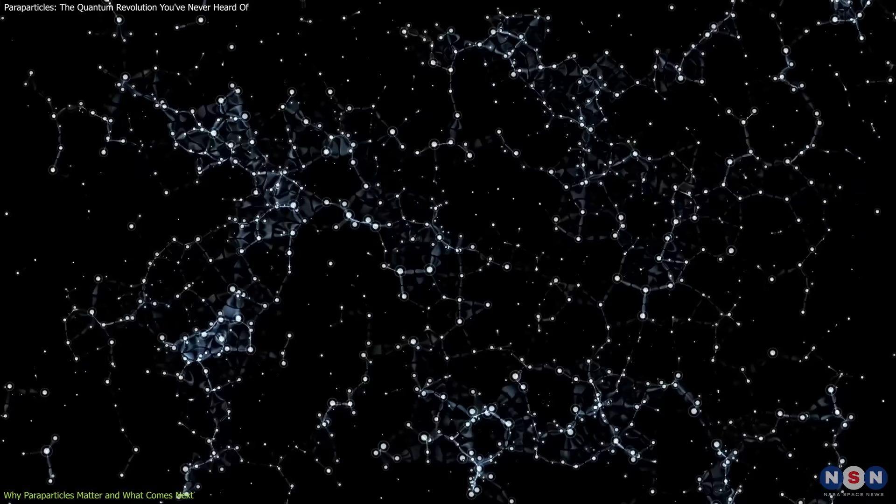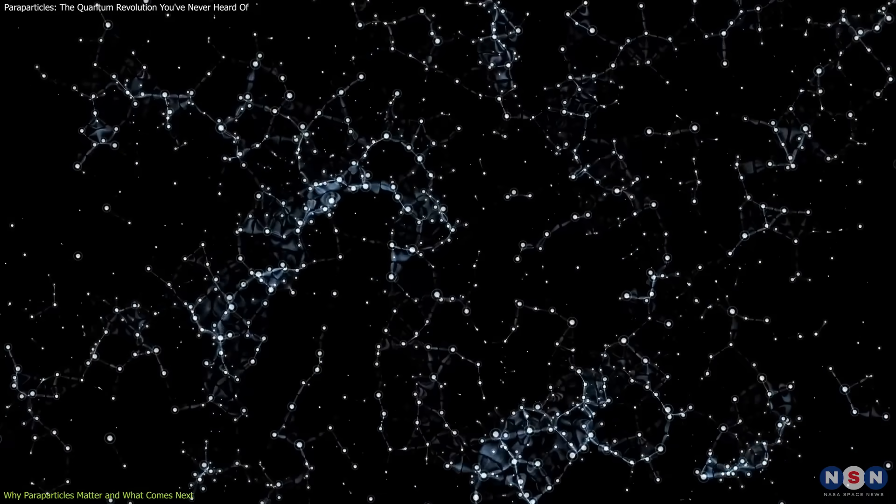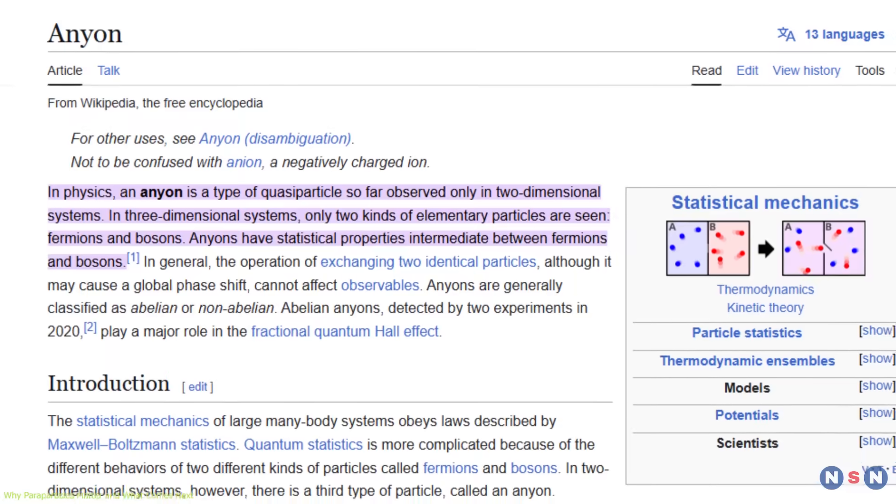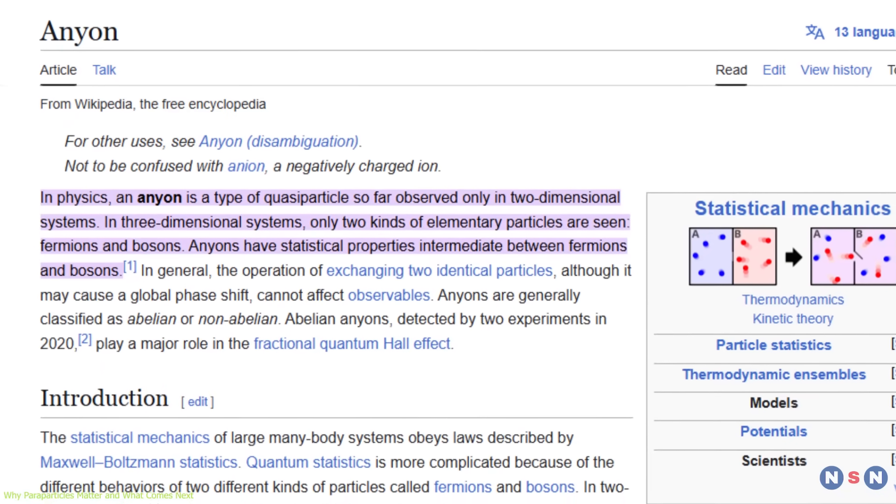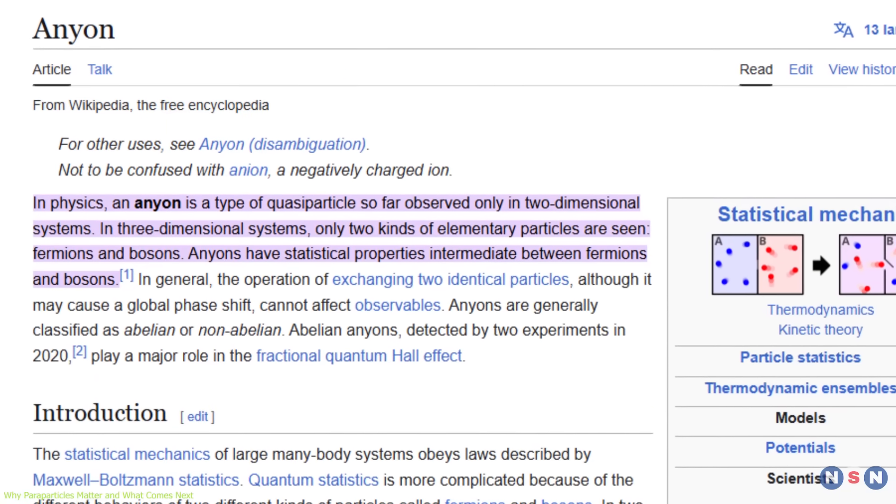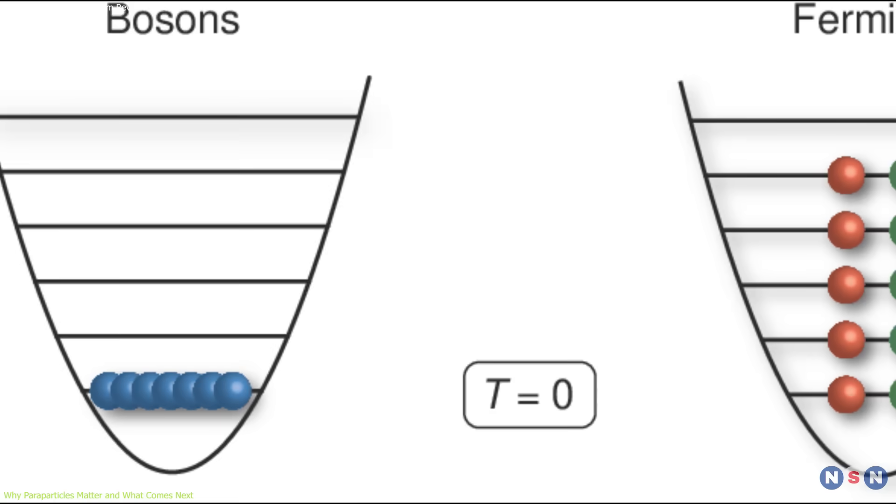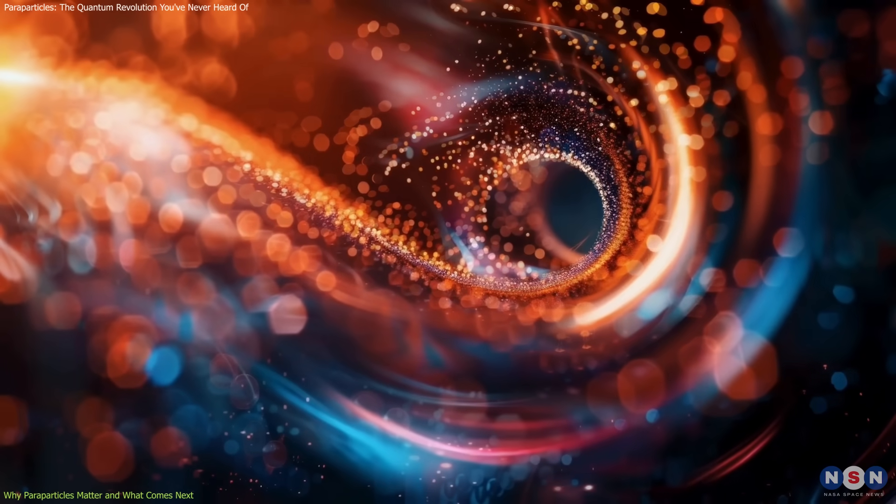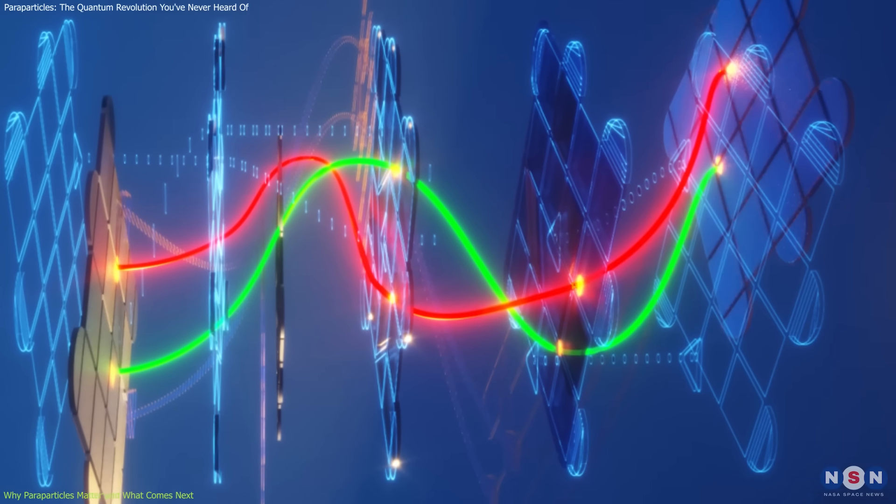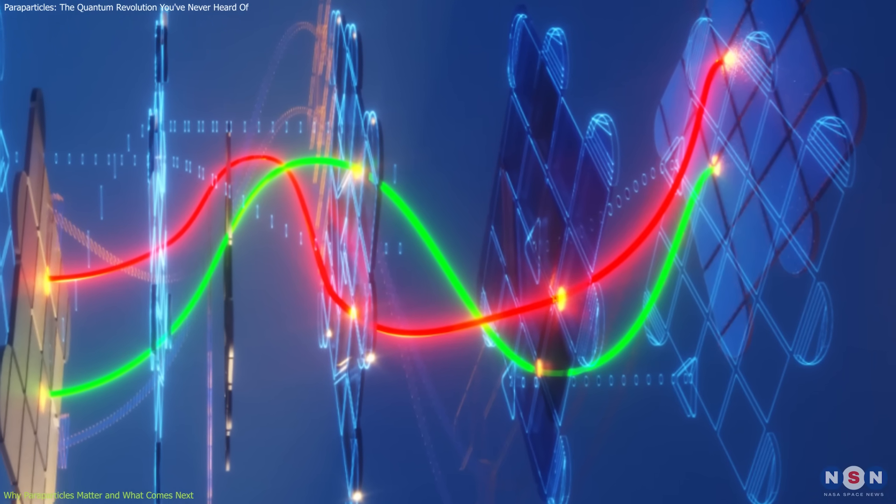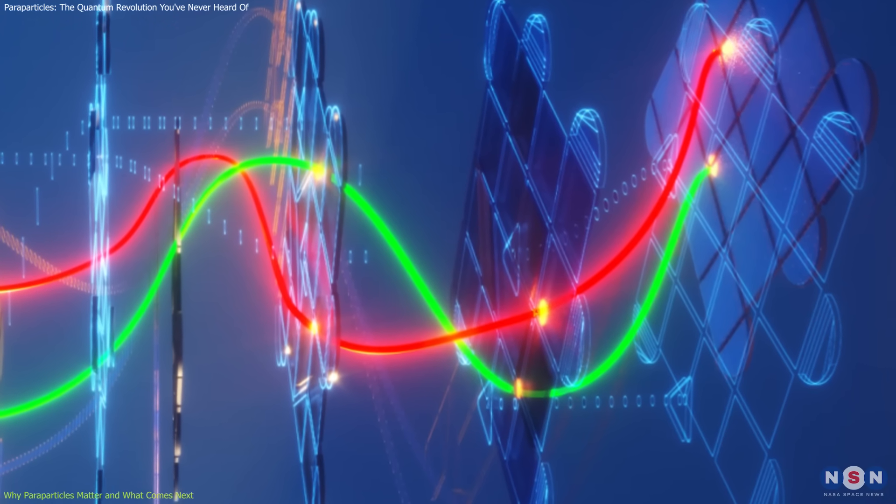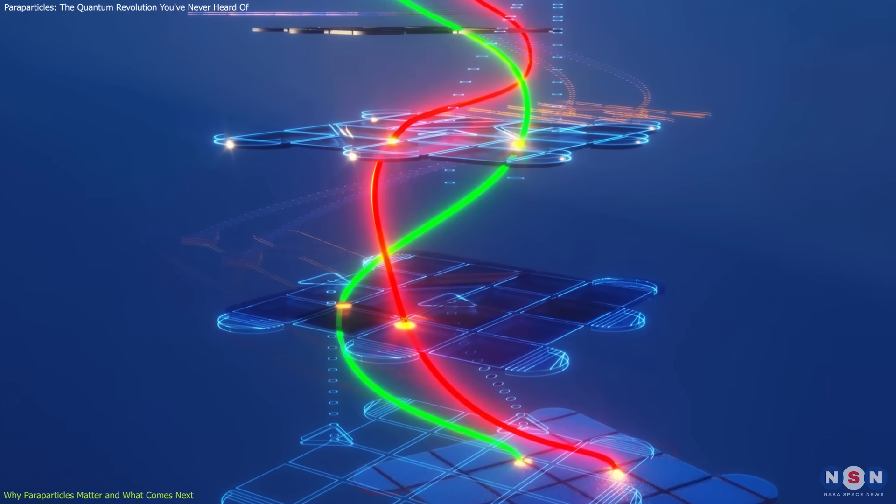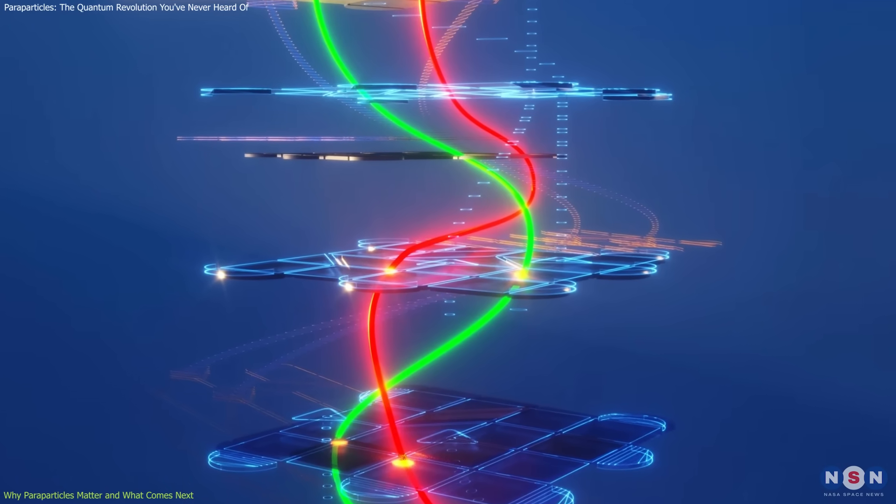Interestingly, the discovery of paraparticles draws parallels with anyons, another exotic particle. Anyons, discovered in two-dimensional systems, challenge conventional particle classification by introducing fractional quantum states. These particles have already demonstrated immense potential in topological quantum computing, where their braided states allow for fault-tolerant and robust qubits.